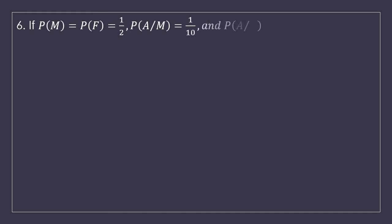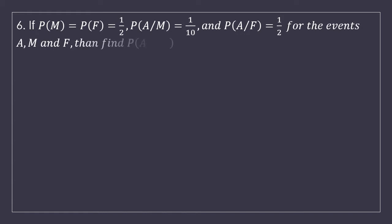Starting with question number 6: if probability of M equals probability of F equals 1 upon 2, and P(A given M) is 1 upon 10 and P(A given F) is 1 upon 2 for the events A, M and F, then find A intersection M and A intersection F. As the question suggests, we have two intersection values, two probability values and two conditional values.